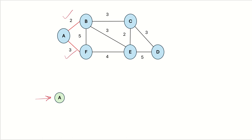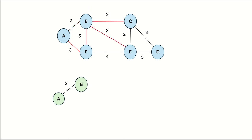We look at the edges in the priority queue and choose the one with minimum weight. We see that edge AB has the minimum weight, so we add edge AB and vertex B to our spanning tree. This is our new spanning tree. Now that vertex B has been added, we update the priority queue with all edges connected to B. Edge AB has already been added, so it is removed from the queue.